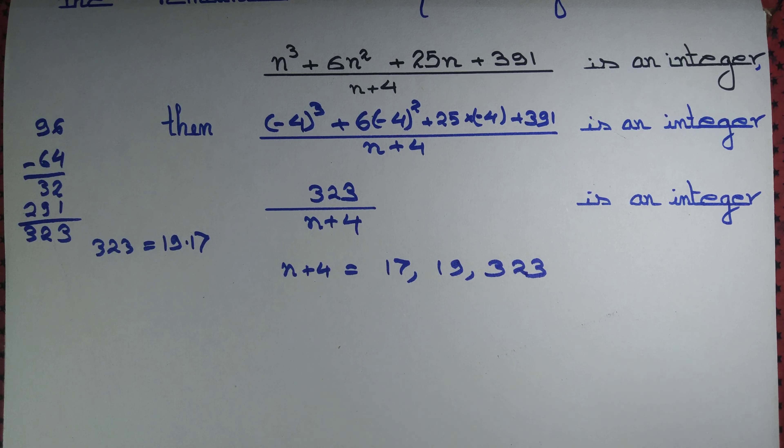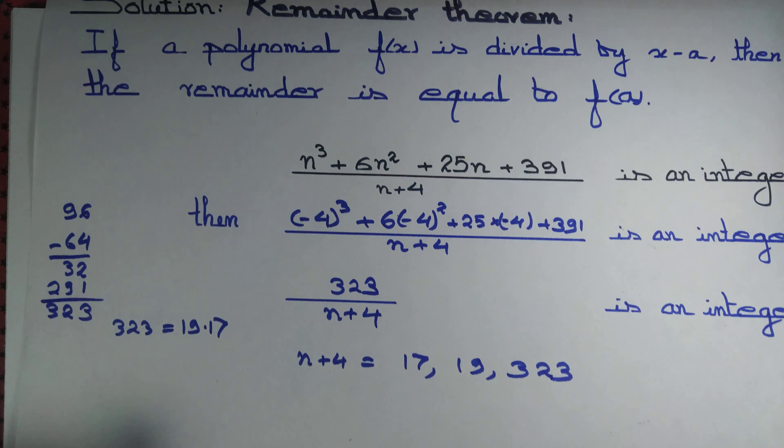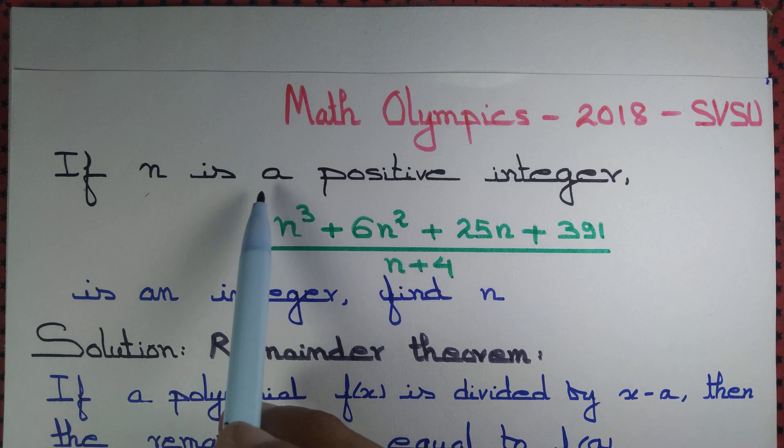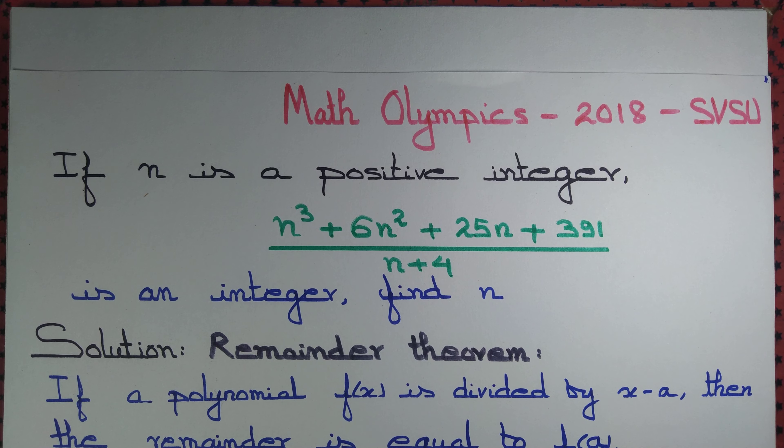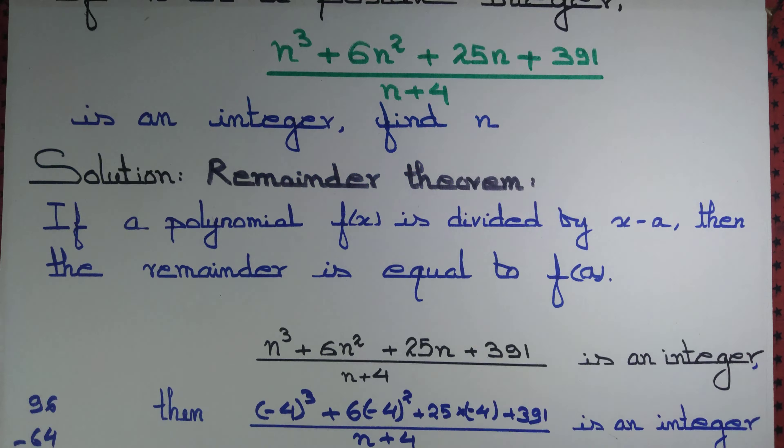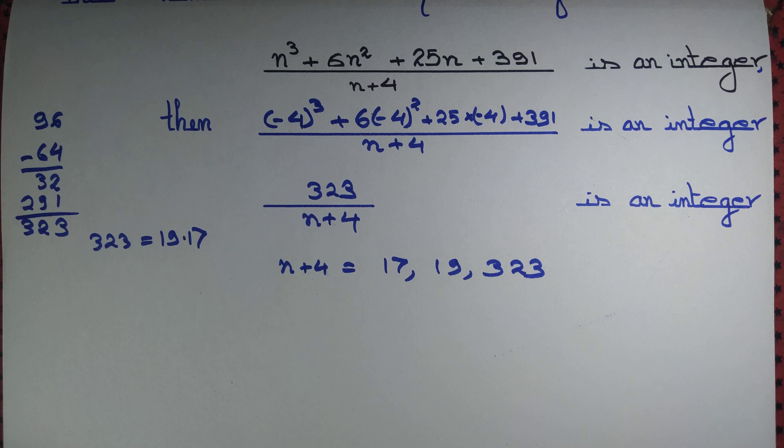One may wonder why not n plus 4 equal to 1. You see that we are taking n to be a positive integer. If I take n plus 4 equal to 1, then n will be equal to minus 3. That's not allowed.